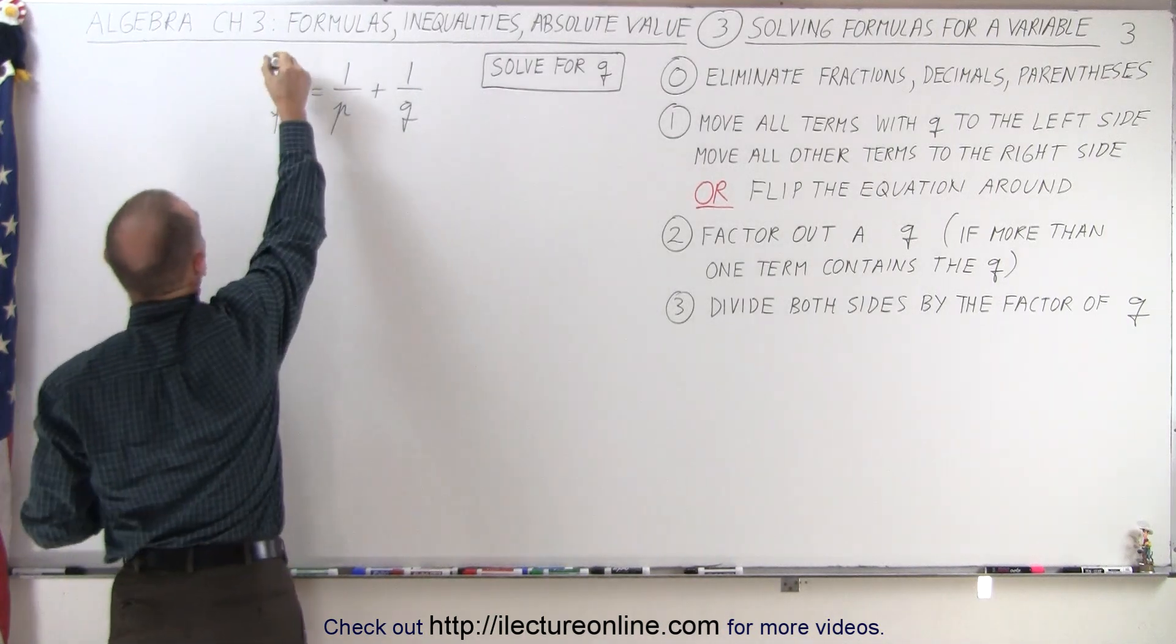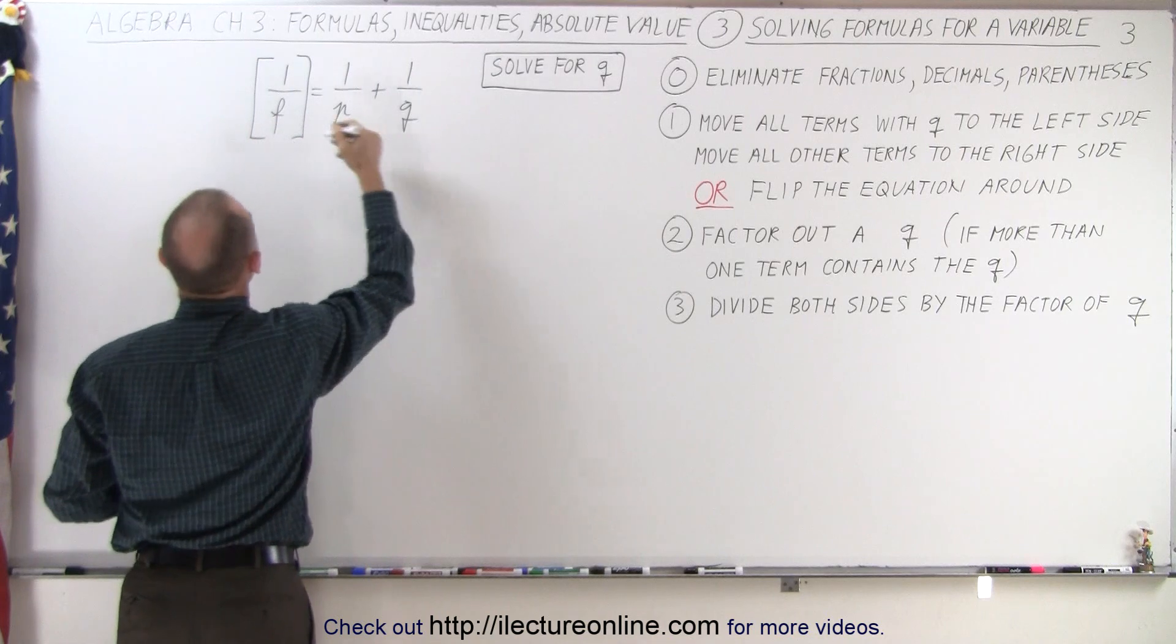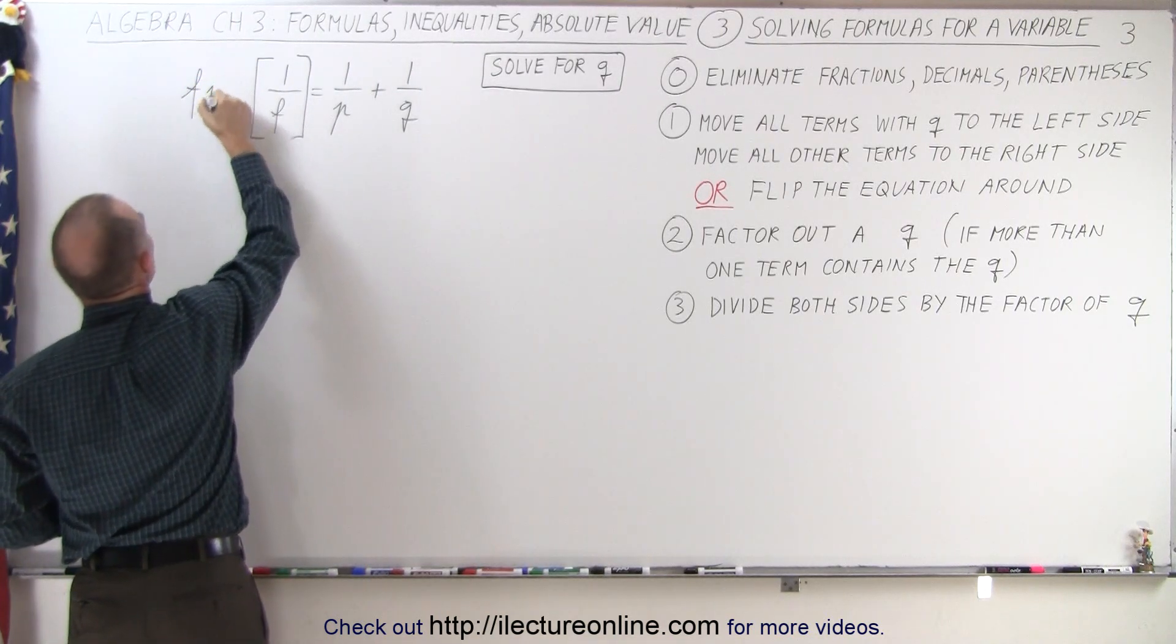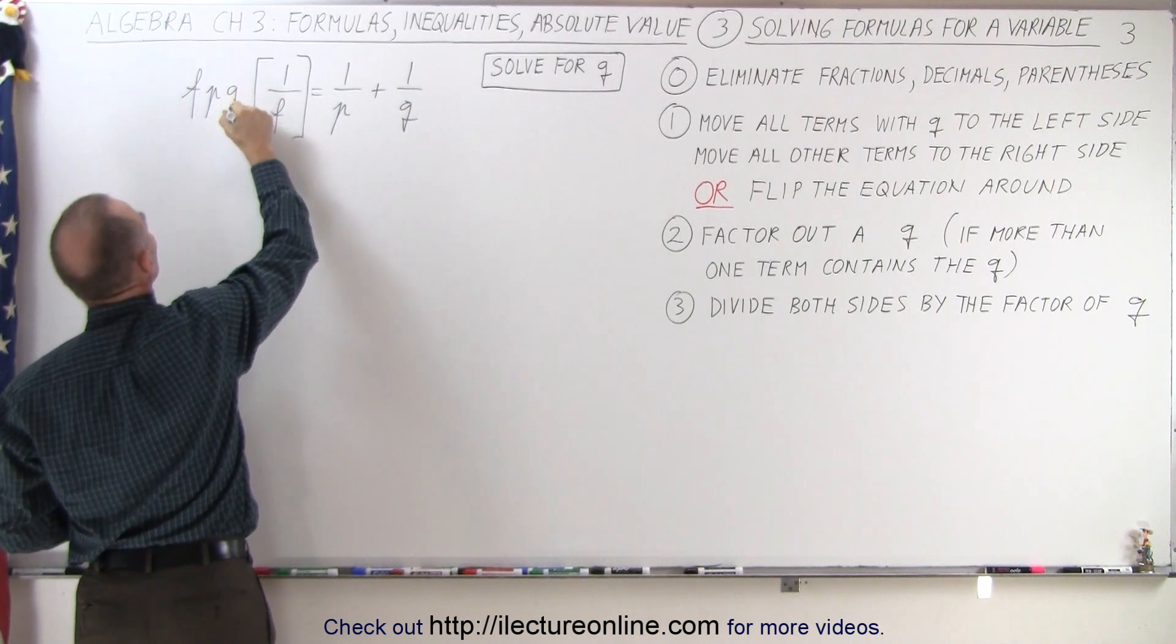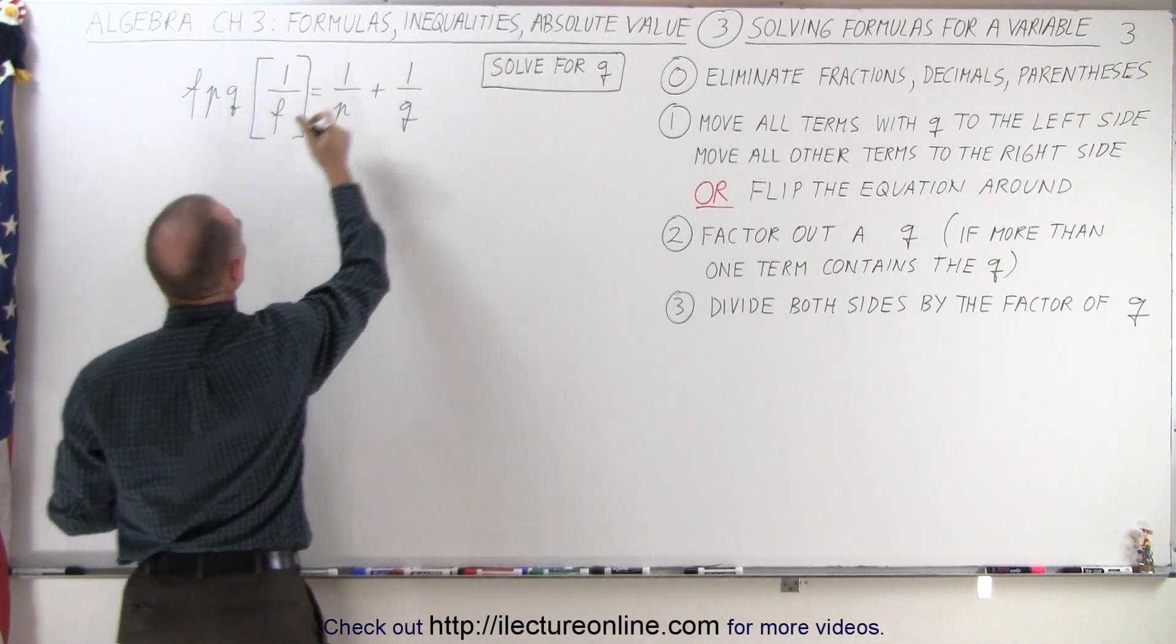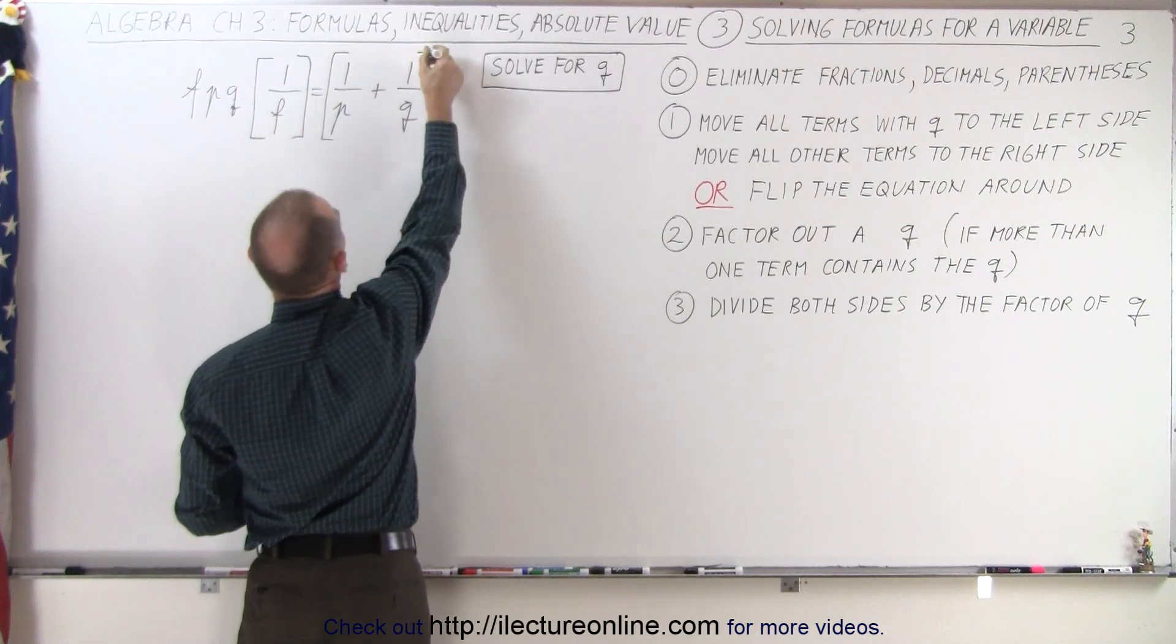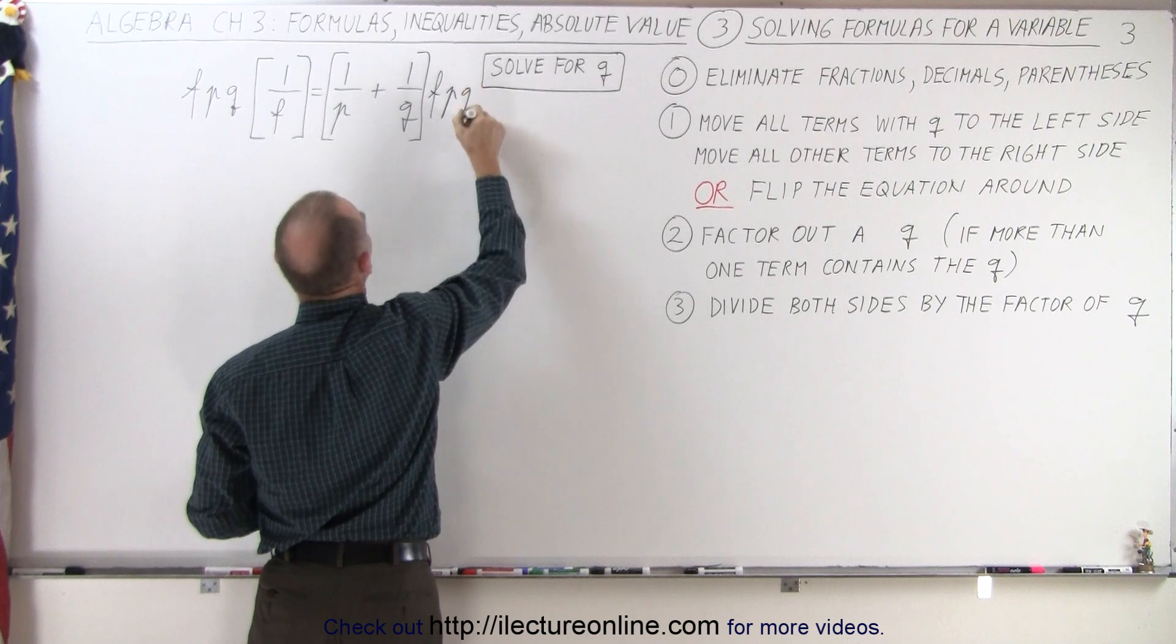So on the left side, we're going to multiply that by F, P times Q. So F, P, and Q. This should be a Q here. So we're multiplying the left side by F times P times Q. And of course, we must do exactly the same to the right side. Multiply that as F times P times Q.